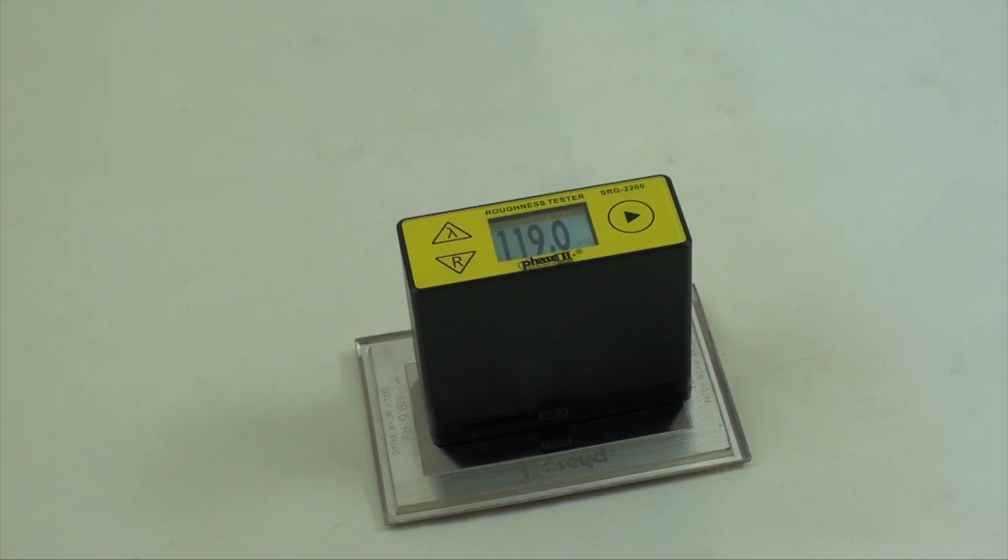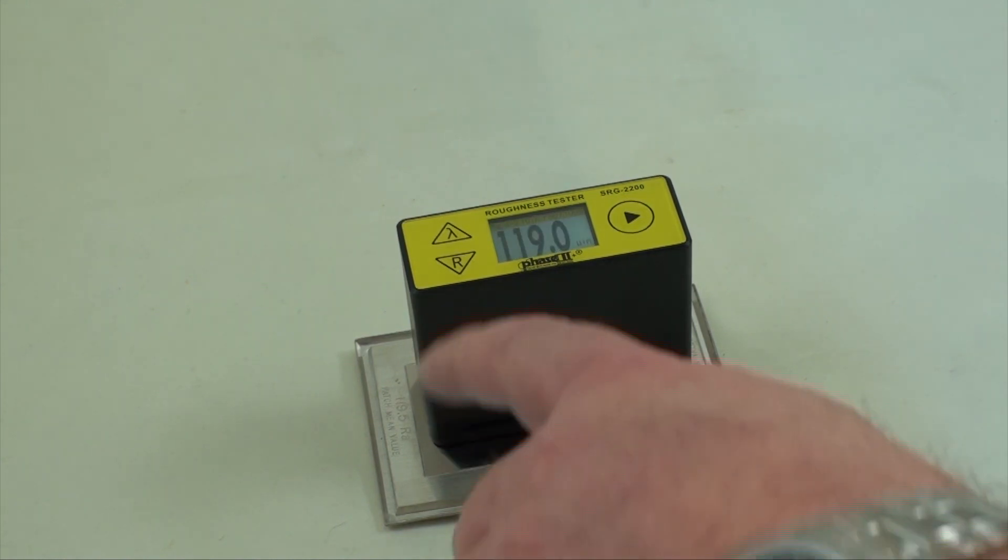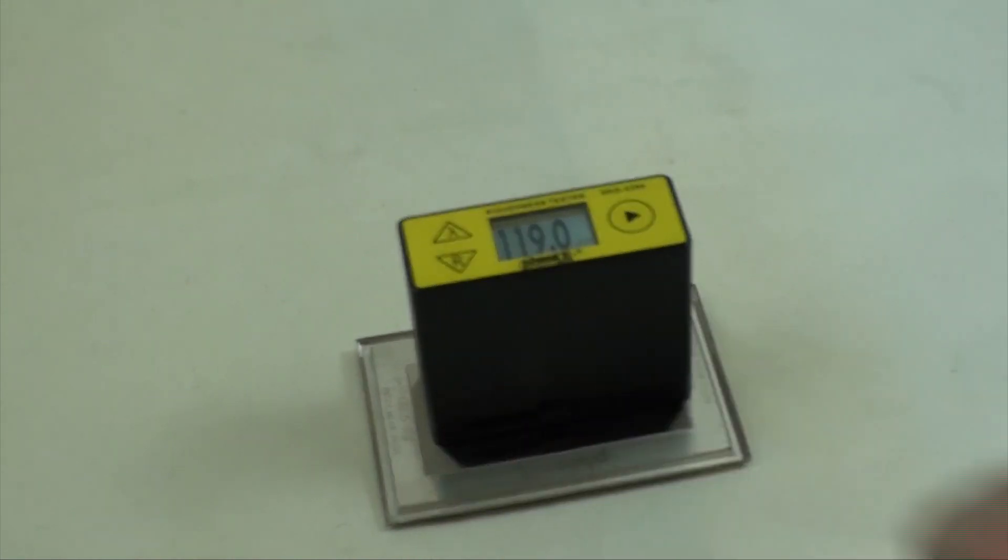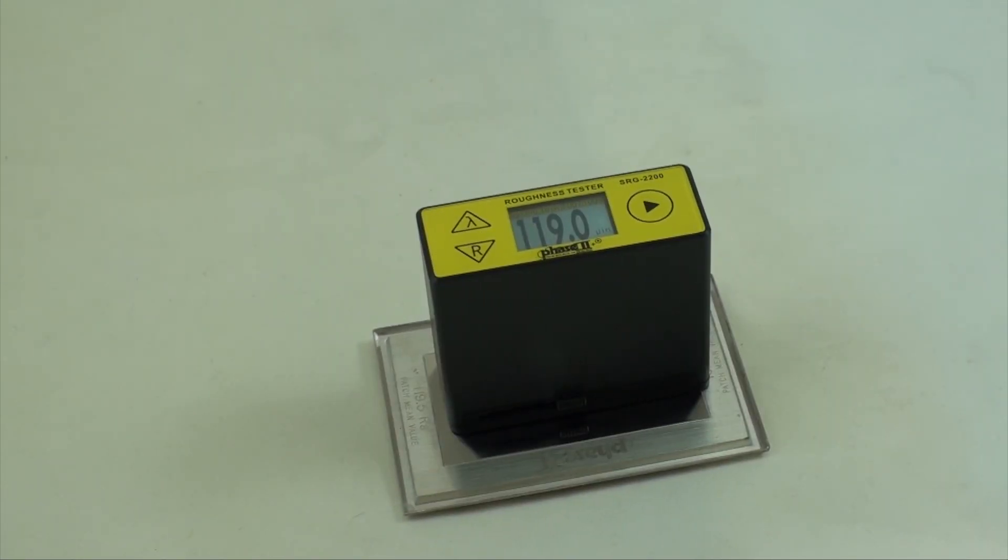Set your parameter setting or roughness scale to be used by pressing the R button. Set your cutoff length using the lambda button.